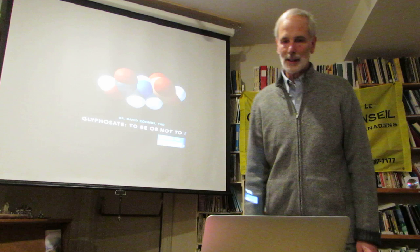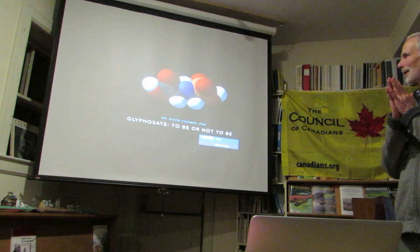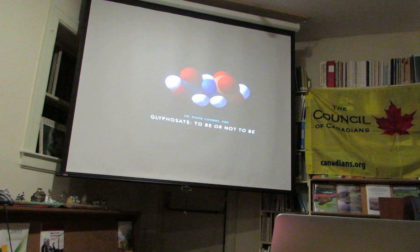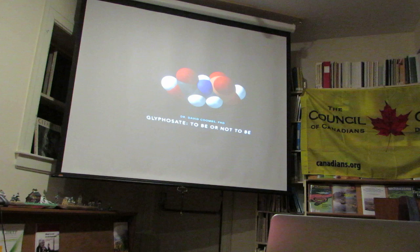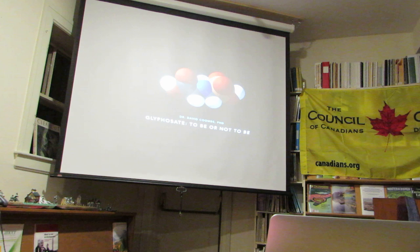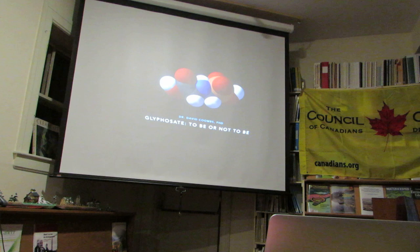So this is glyphosate. It's a really simple molecule, and that's a lovely picture of it. The reds are oxygen, the whites are hydrogen, the blacks are carbon, and the phosphate is on the right side — that's the orange one. So it's basically phosphate, nothing big but phosphate, and glycine, which is an amino acid.